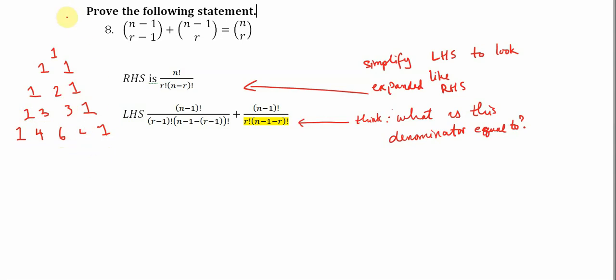And what this identity is showing us is, let's say that this number here is n choose r. Well, it's formed by the two numbers above, right?